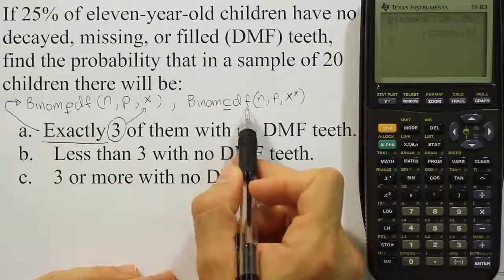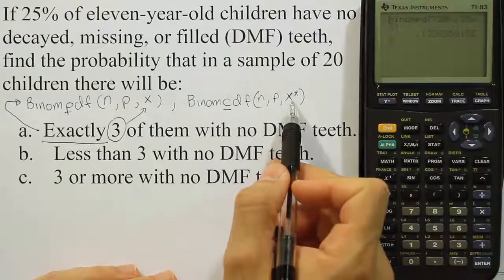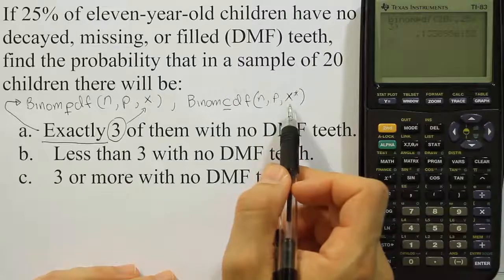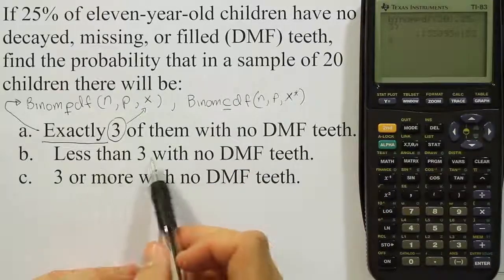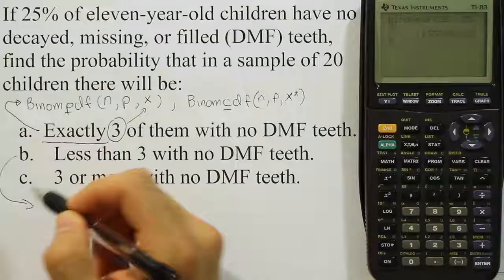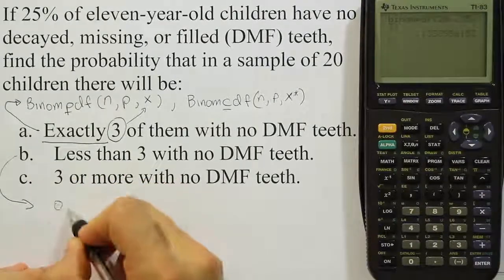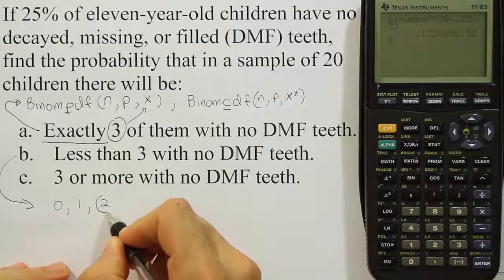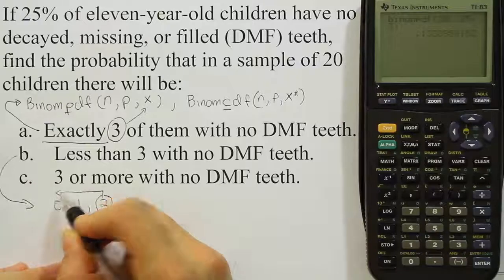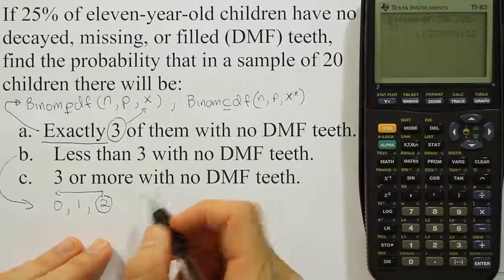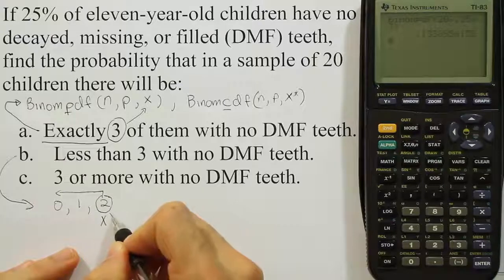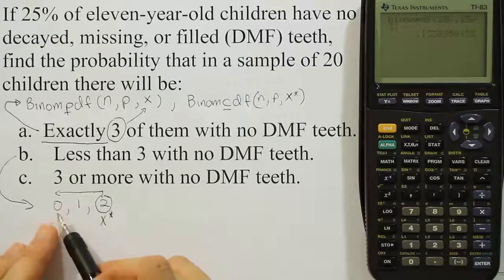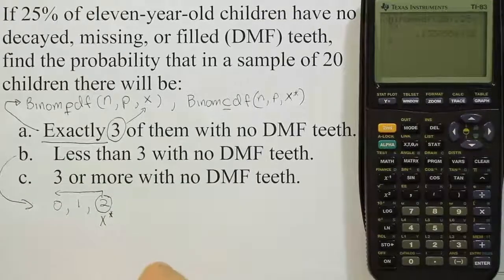The cumulative density function is going to take the number we give it, calculate the probability for it and all the numbers below it all the way down to 0, and add them all together. So for example, if we want to do less than 3, if we think about part B, less than 3 is going to be 0, 1, or 2. Not 3 though. So we need to give the calculator 2, so it goes from 2 down to 0 and adds all that up for us, and that's the probability we'll need. So our x star value is 2, because in that problem we want to go from 2, 1, or 0, all the values less than 3.